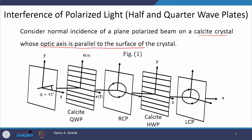If we somehow make these rays interfere, then we will get different kinds of control over the light. To understand the concept of half and quarter wave plates, let us consider the normal incidence of a plane polarized beam on a calcite crystal. Keep in mind that the calcite crystal is a negative crystal.